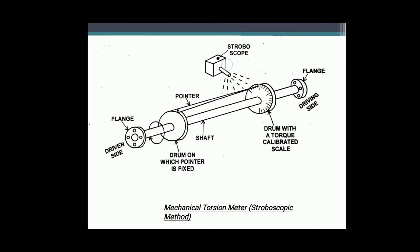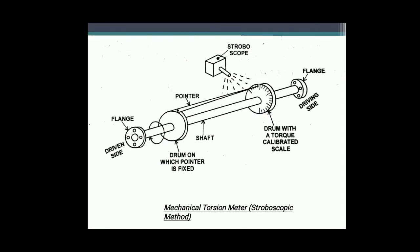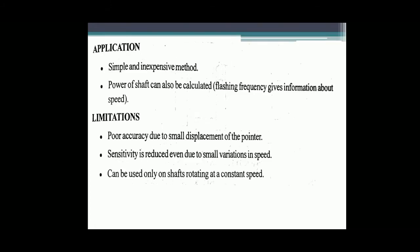Since the scale on the drum is rotating, a stroboscope is used. The flashing light of the stroboscope is made to fall on the scale and the flashing frequency is adjusted till a stationary image is obtained. Then the scale reading is noted. This is how the mechanical torsion meter works. It is a very simple and inexpensive method to calculate the power of a shaft. Its limitations are: poor accuracy due to small displacement of the pointer, sensitivity is reduced due to small vibrations in speed, and it can be used only on shafts rotating at a constant speed.